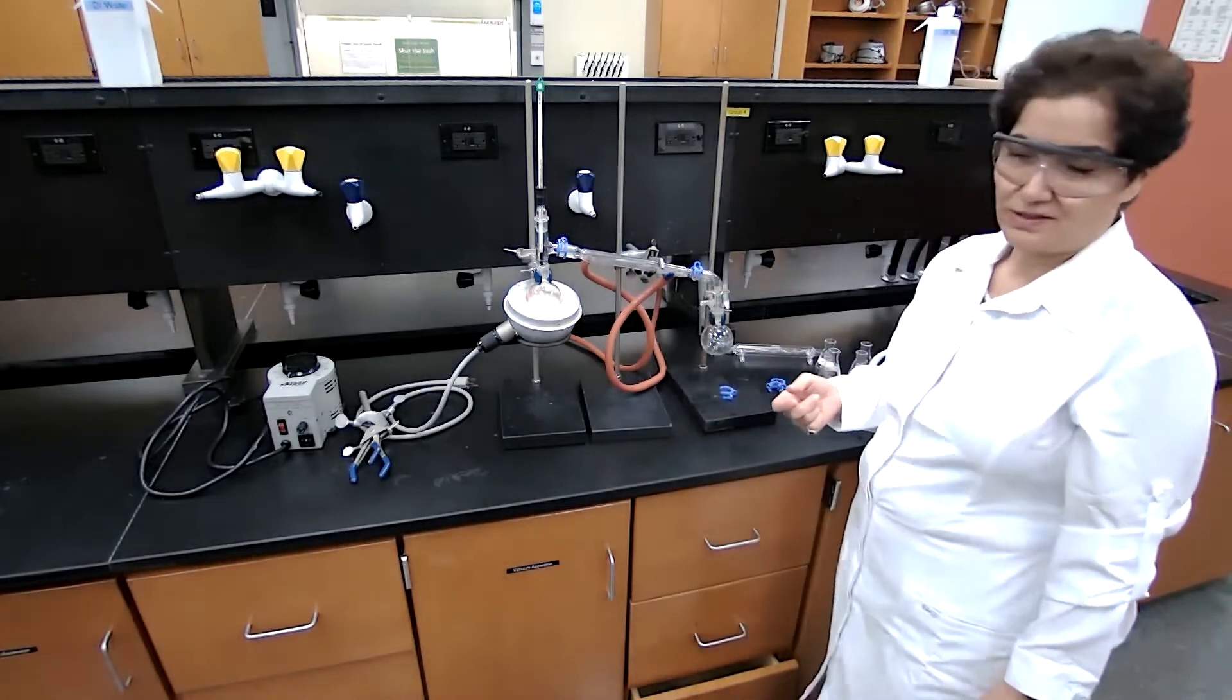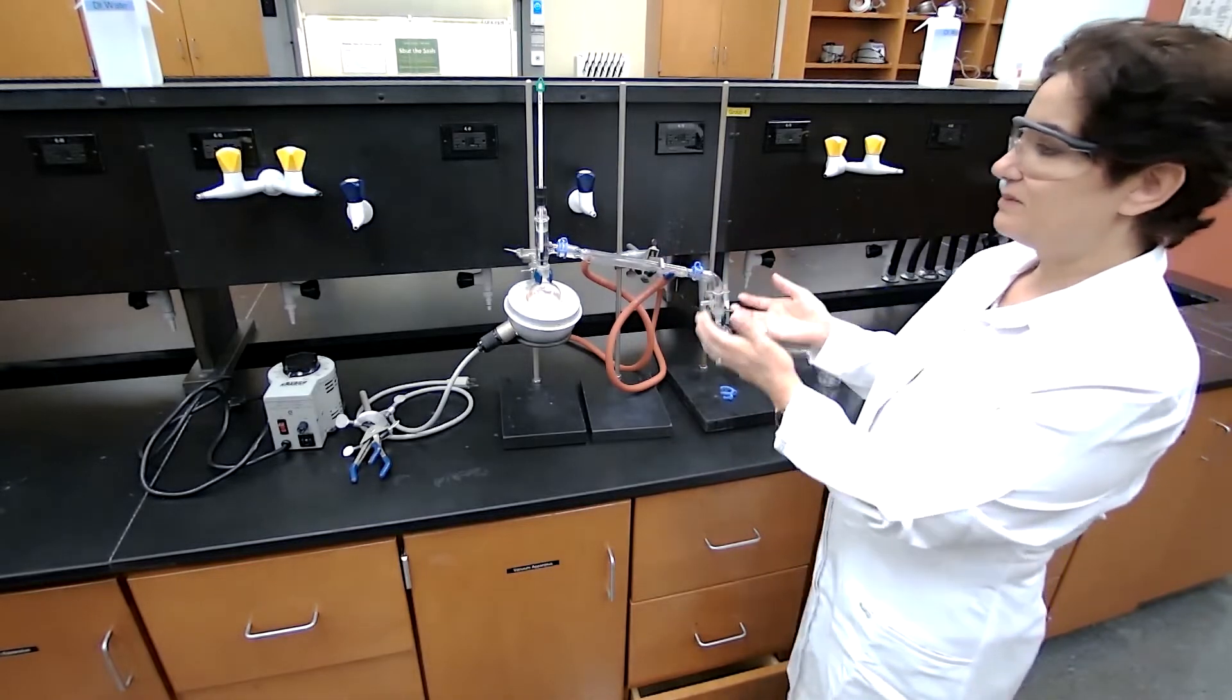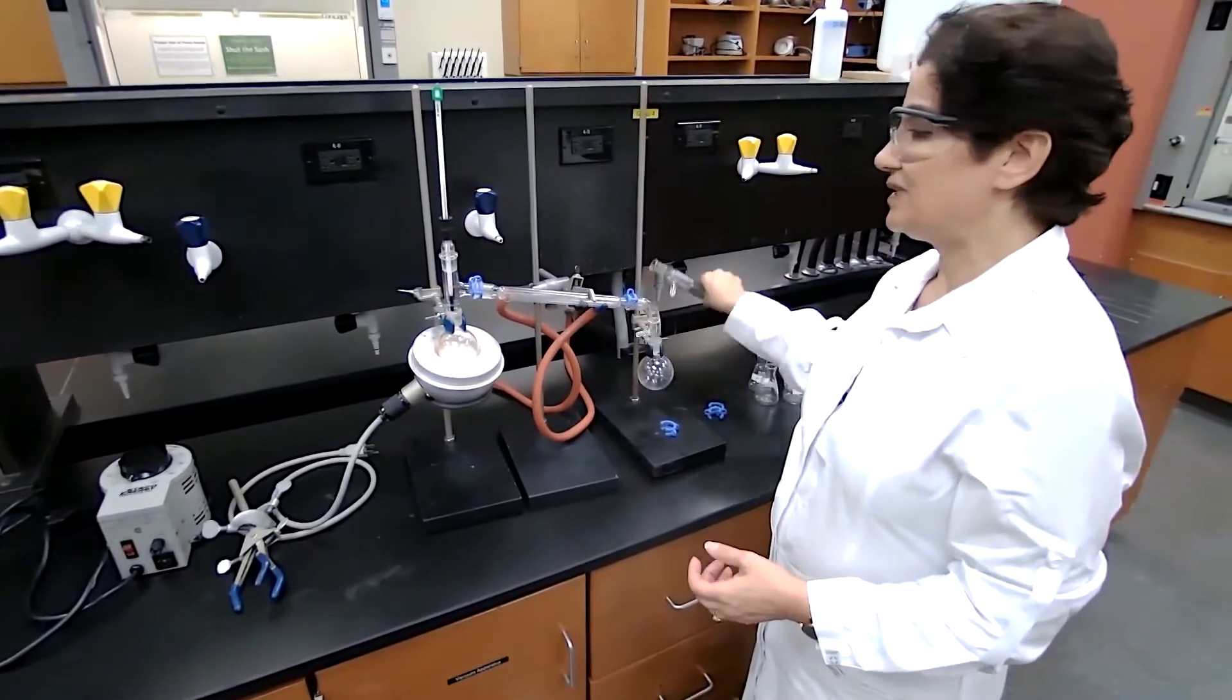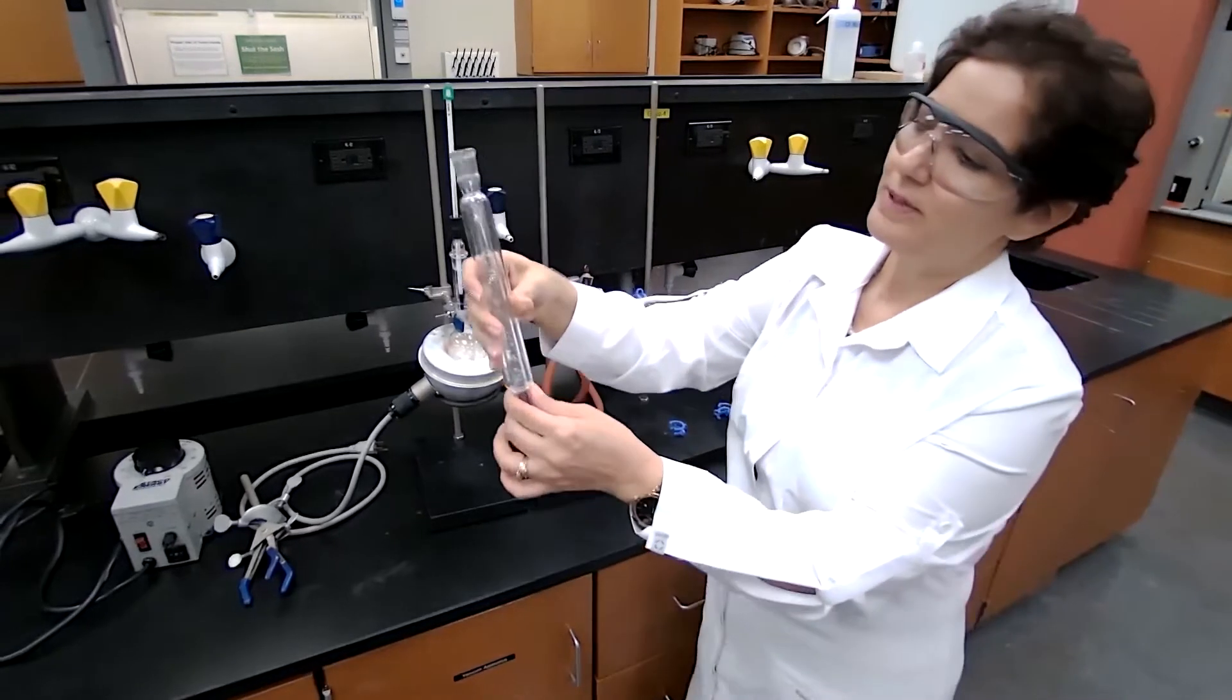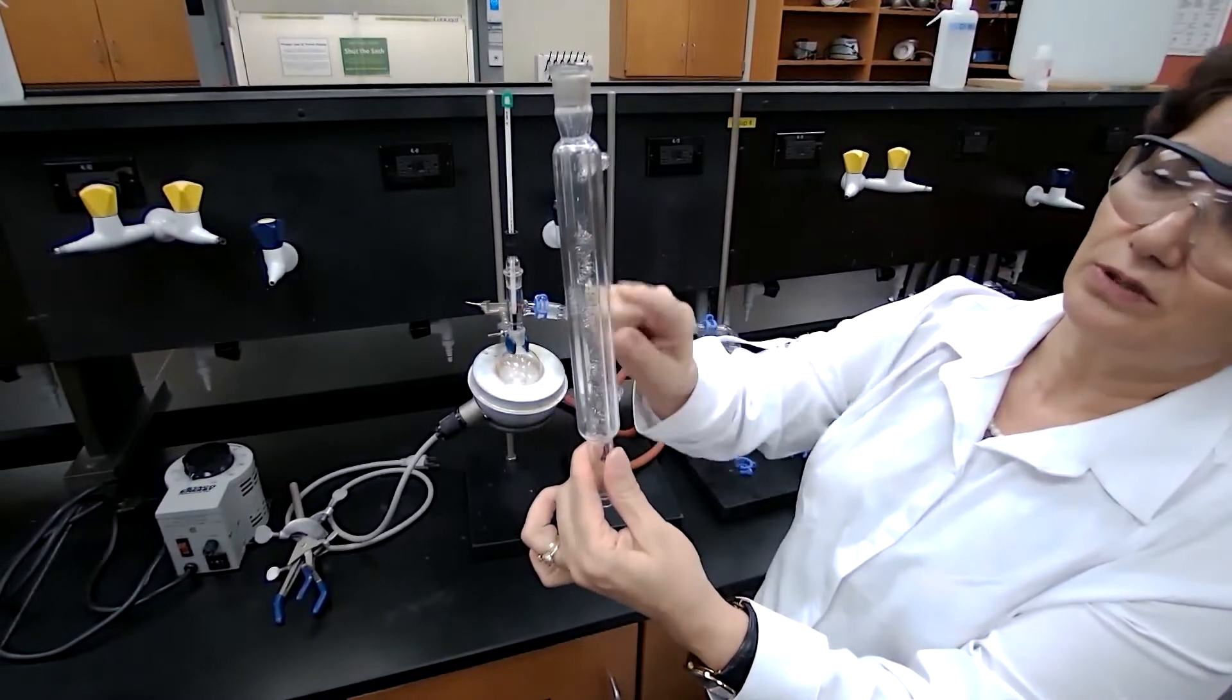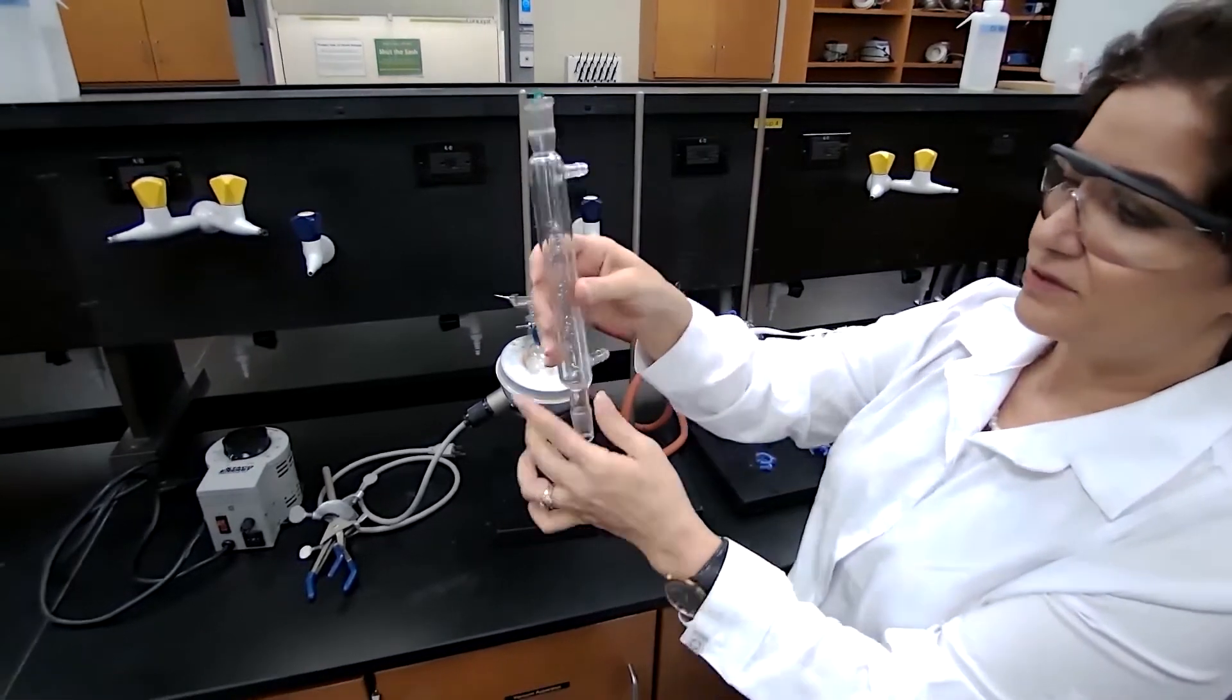In terms of apparatus, you just saw me assembling a simple distillation. The difference between simple and fractional distillation is addition of a fractionating column. It could be like this homemade one - we are adding steel wool to the condenser and we use that as a fractionating column. It's going to be inserted between the boiling flask and the distillation head.